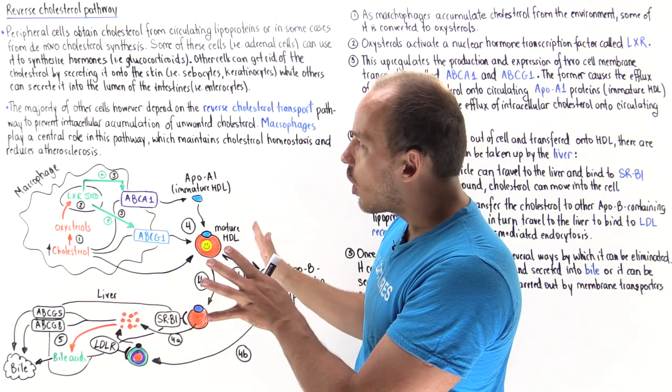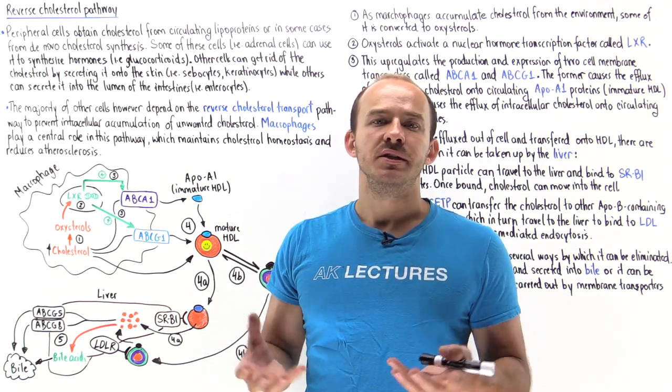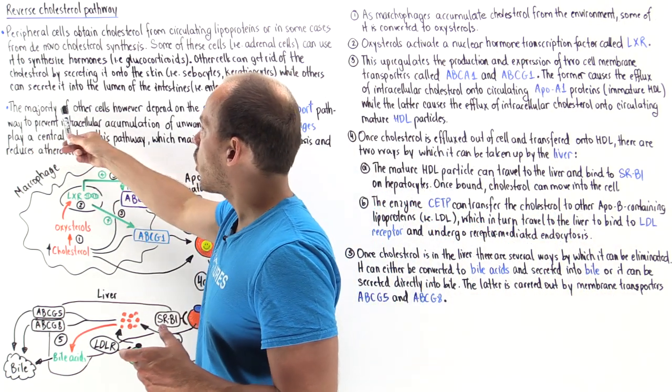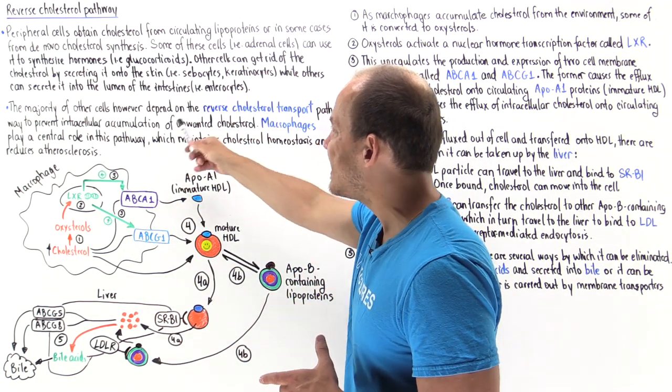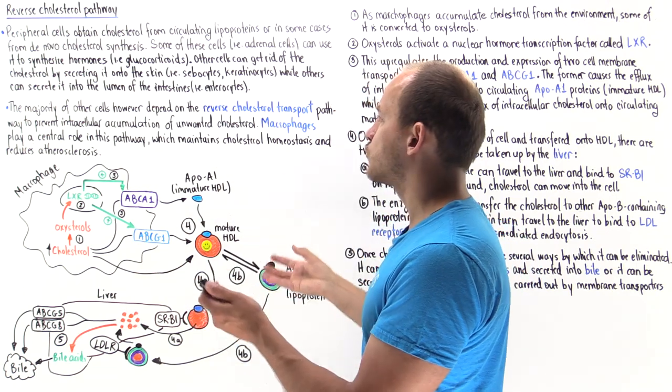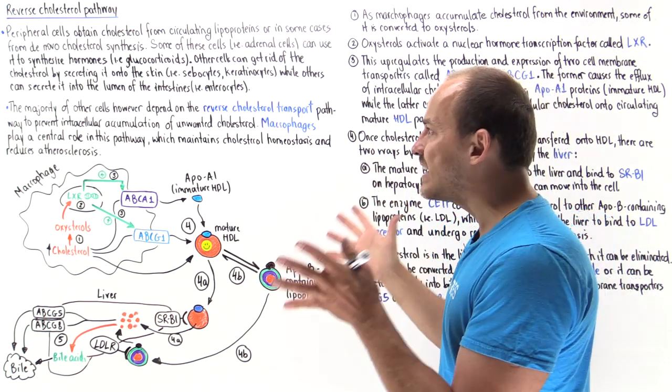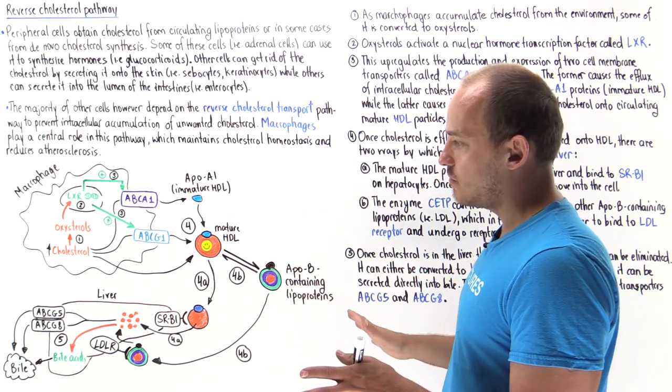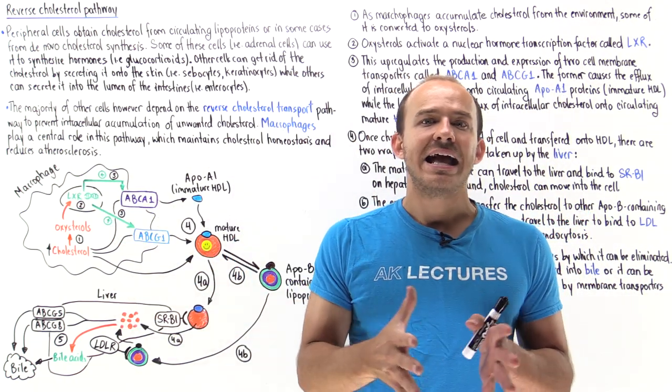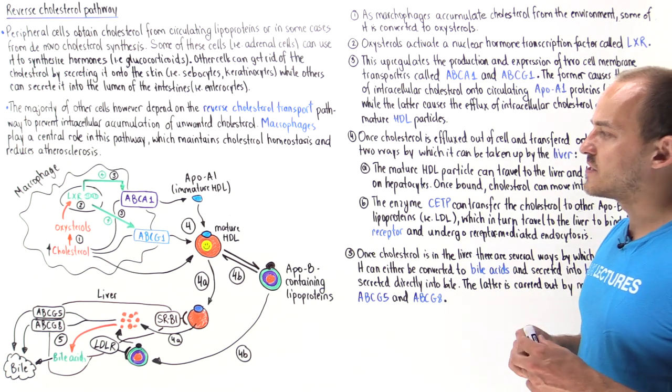But the majority of the peripheral cells of the body actually have no other way of ridding the cell of any unwanted cholesterol. And that's where this reverse cholesterol pathway comes into play. The majority of other peripheral cells of the body depend on this reverse cholesterol transport pathway to prevent the unwanted buildup of extra cholesterol within the cell. HDL particles and macrophages actually play a central role in this pathway. This ultimately helps maintain cholesterol homeostasis and reduces the risk of developing atherosclerosis of our blood vessels.